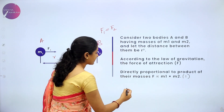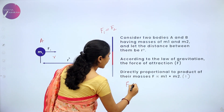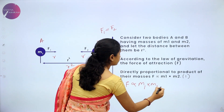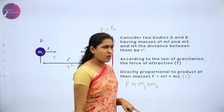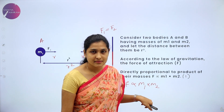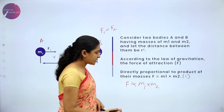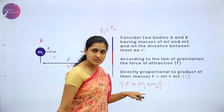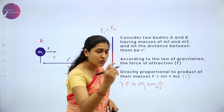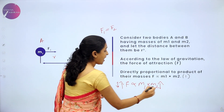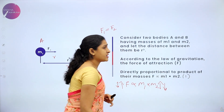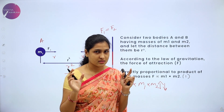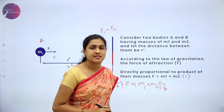What do you mean by directly proportional? F is directly proportional to the product of their masses. If one quantity increases, another quantity also increases. If one quantity decreases, another quantity also decreases simultaneously.